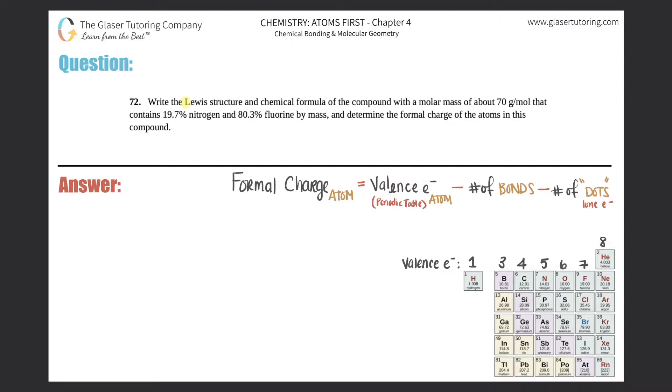Number 72: Write the Lewis structure and chemical formula of a compound with a molar mass of about 70 grams per mole that contains 19.7% nitrogen and 80.3% fluorine by mass, and determine the formal charge of the atoms in this compound. A lot of stuff going on, but we got it.